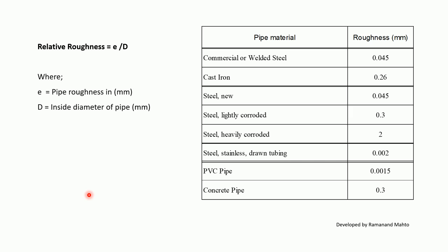Relative roughness is calculated as: e/D, where e (small E) is the pipe roughness in mm and D (capital D) is the inside diameter of the pipe in mm. Based on pipe material, roughness values are given in a chart.